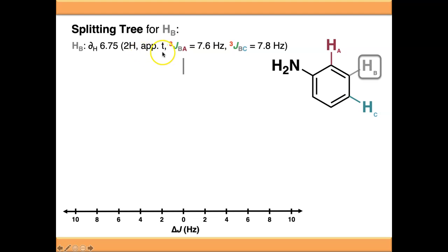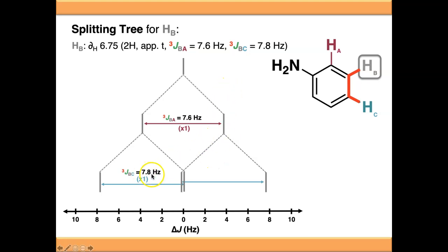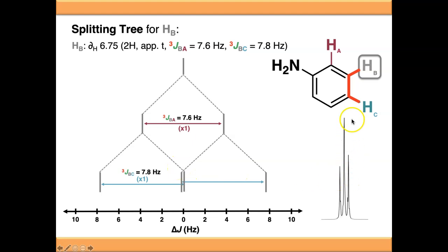The terminology I tend to use is 'apparent triplet' - a signal which looks like a triplet due to the limitations of the spectrometer or coincidence, but isn't really. If we look at the J values: B coupling to A is 7.6 Hz, B coupling to C is 7.8 Hz - very, very similar J values. If we start by coupling to HA at 7.6 Hz, and then split everything again by the HC coupling, because this J value is ever so slightly different, these two signals don't quite coalesce in the middle. If it was 7.6 Hz they absolutely would. Technically what we've got is a doublet of doublets, but these two signals in the middle are very, very close together, so our signal actually looks like a triplet.